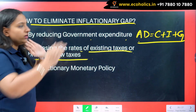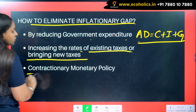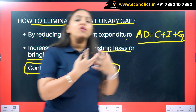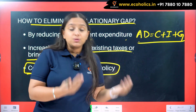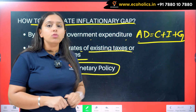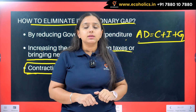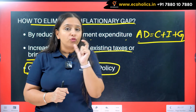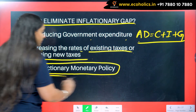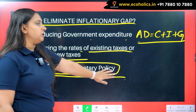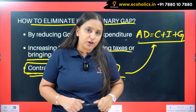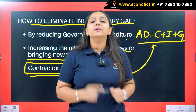Another remedy is contractionary monetary policy. When money supply expands, people have more cash in their hands and more purchasing power, which naturally increases demand. So when the government implements contractionary monetary policy, it automatically leads to a fall in demand. These are the few remedies to eliminate the inflationary gap. I hope the concept of inflationary gap is now clear to all of you.